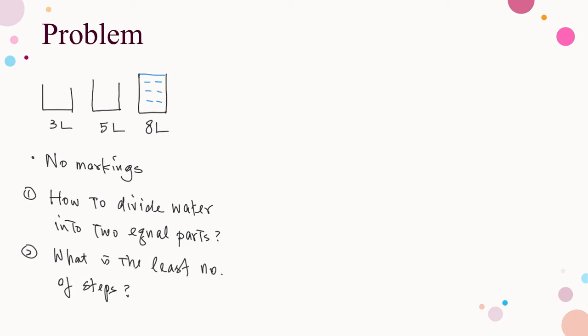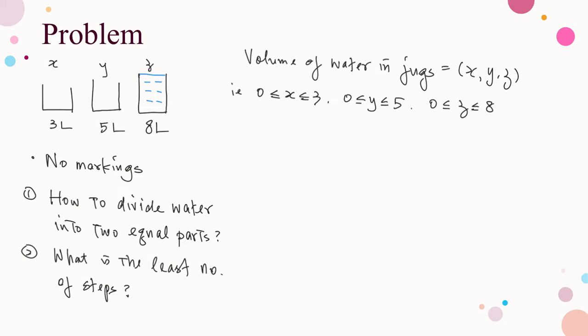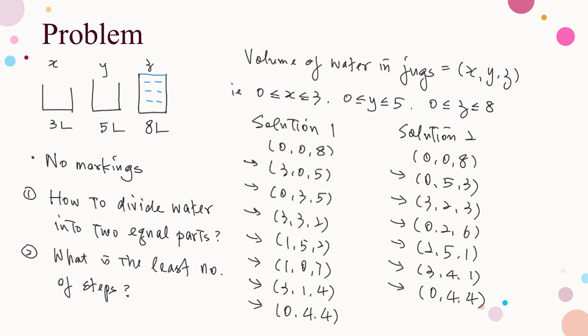Let us denote the volumes of water in the jugs by x, y, z, where the first number denotes the volume in the small jug, the second refers to the middle jug, and the third refers to the large jug. The solution can be represented by the following sequences. In the first sequence it is done in eight steps. In the second sequence it is done in seven steps, so the least number of steps is seven.